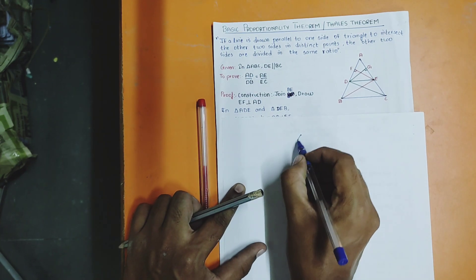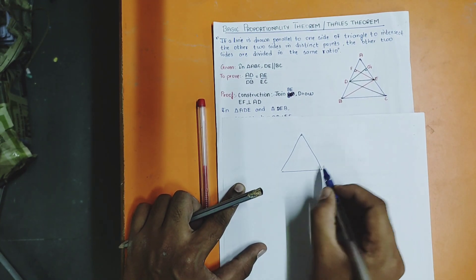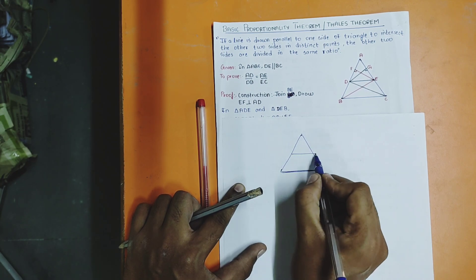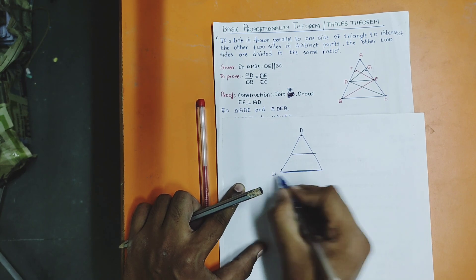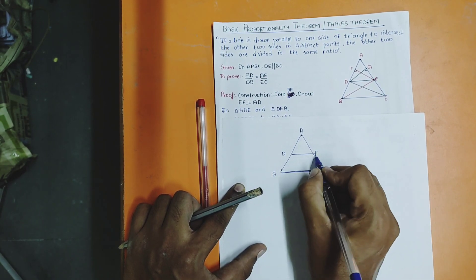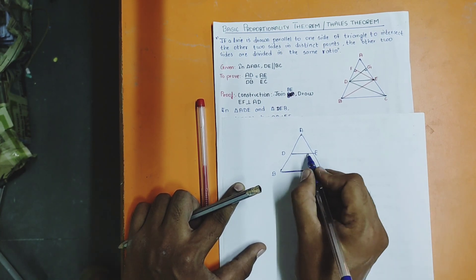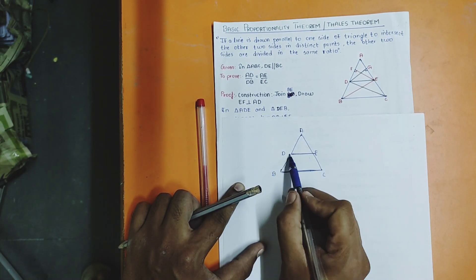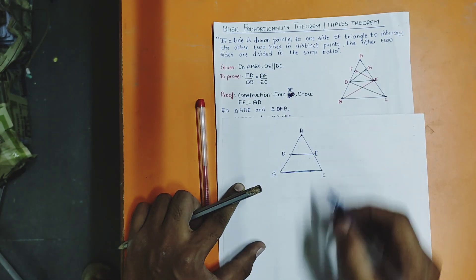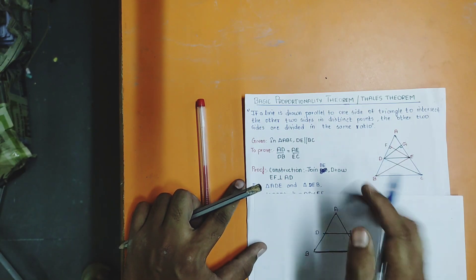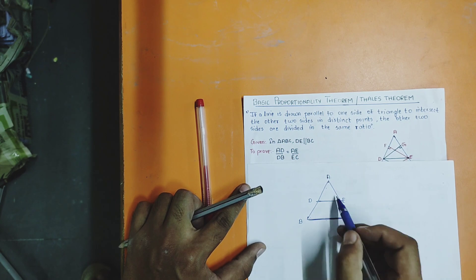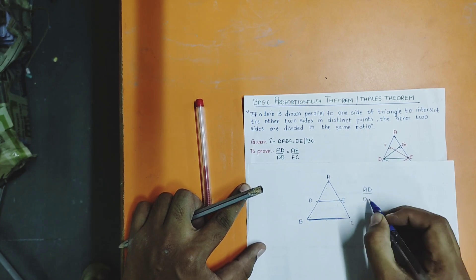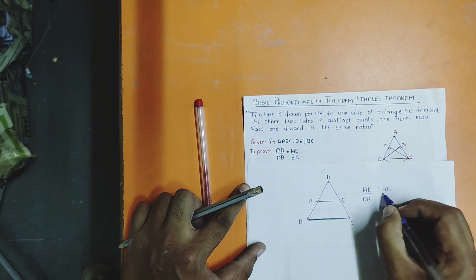If a line is drawn parallel to one side of a triangle and intersects the other two sides at distinct points, then the other two sides are divided in the same ratio. So, to prove: AD by DB is equal to AE by EC. I have drawn triangle ABC with line DE parallel to BC.